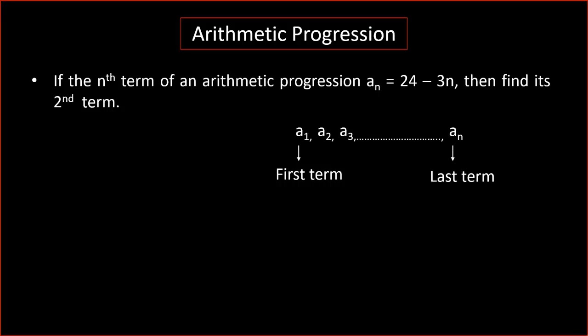In this question, the arithmetic progression's nth term is given. That is, 24 minus 3n. We need to find out the second term.